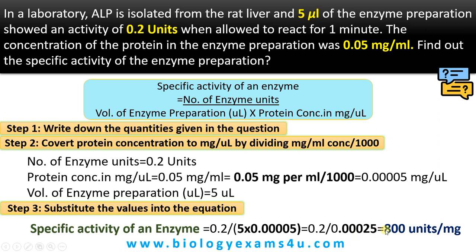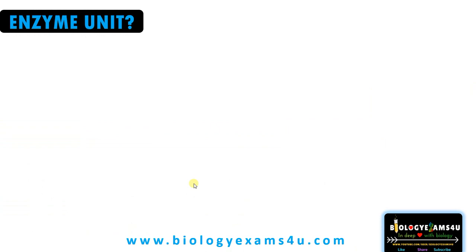That equals 800 units per mg. So this is how we calculate the specific activity of an enzyme. Hope you are clear. We have also given another video on how to calculate the number of enzyme units in a sample — you can refer to that for more.